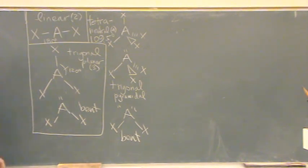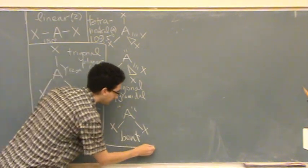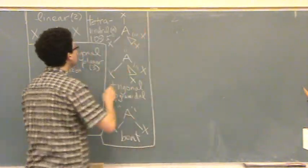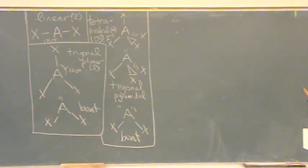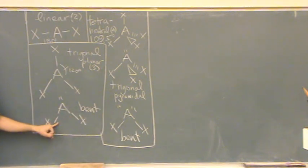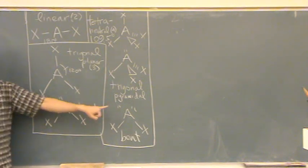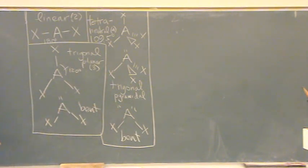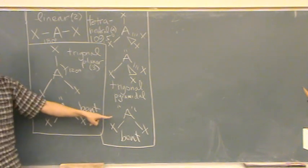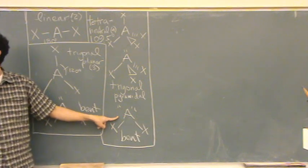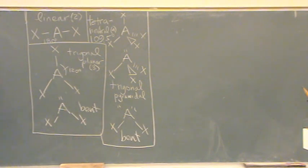So there's all the four group ones. Notice that these two are both called bent, but they're different because this has one lone pair, this has two. So they are different and their electronic name is different. This is bent, the trigonal planar electronic group. This is bent with tetrahedral electronic geometry.